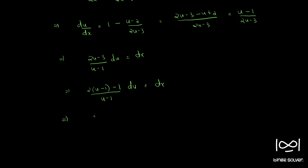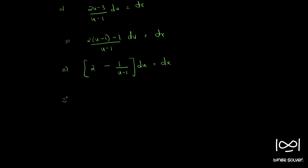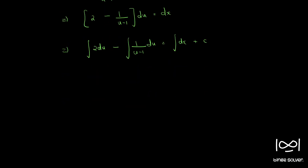Opening this, we get 2 minus 1 by u minus 1, into du equal to dx. Integrating both sides gives: integral 2 du minus integral 1 by u minus 1 du equal to integral dx plus constant, which gives 2u minus log of u minus 1 equal to x plus c.